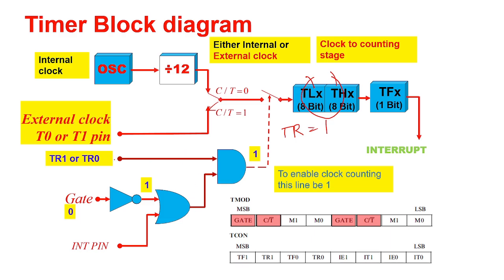Suppose Gate is 0 — that means it is a software timer. If Gate is 0 and the OR gate has one high input, the output will be 1. With both inputs of the AND gate high, the timer will start to count.